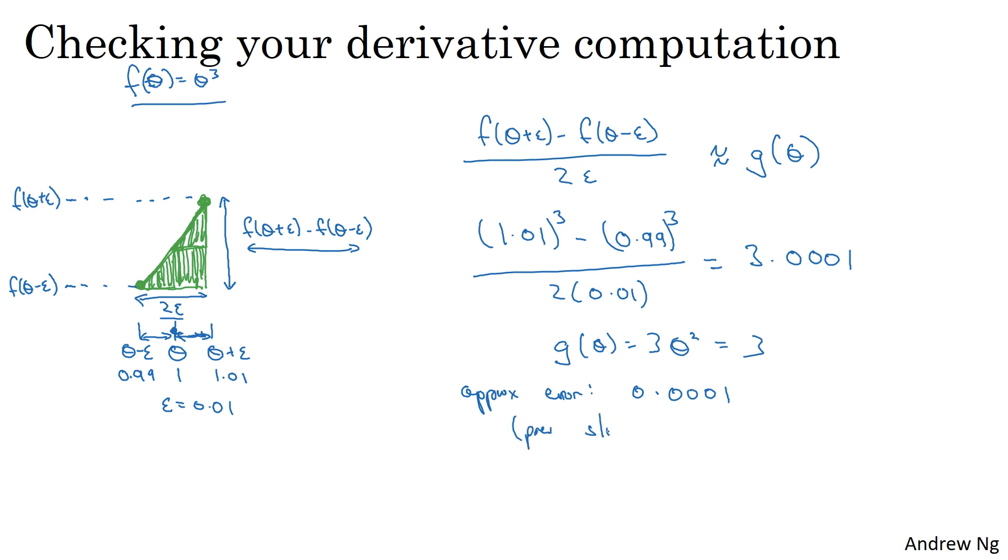So these two values are actually very close to each other. The approximation error is now 0.0001, whereas on the previous slide with taking the one-sided difference, just theta and theta plus epsilon, we had gotten 3.0301. And so the approximation error was 0.03, rather than 0.0001. But so with this two-sided difference way of approximating the derivative, you find that this is extremely close to 3. And so this gives you much greater confidence that g of theta is probably a correct implementation of the derivative of f.